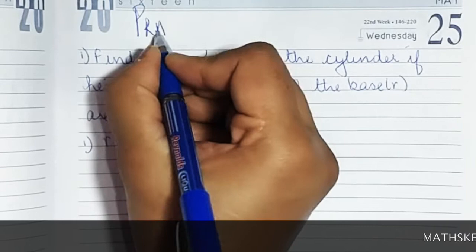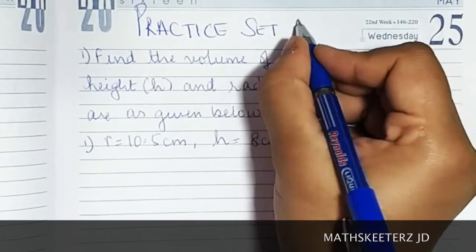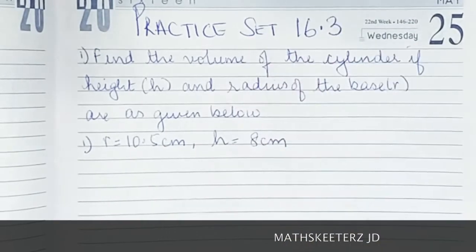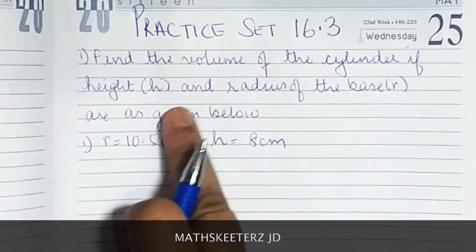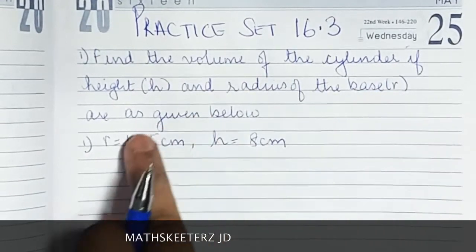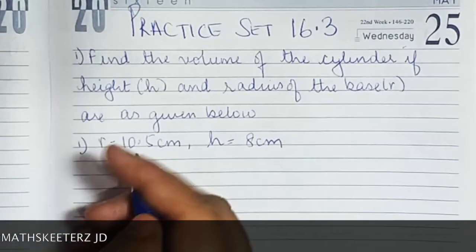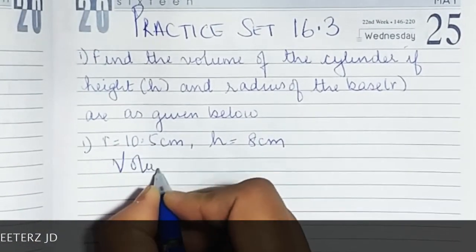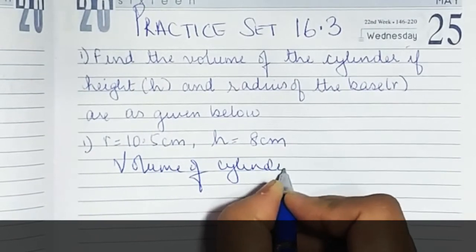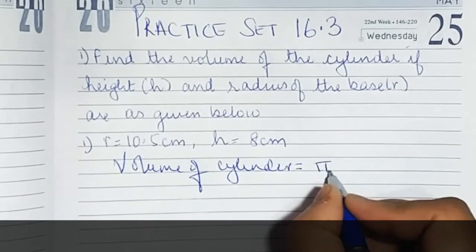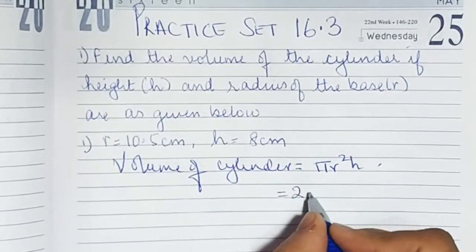Let's start with Practice Set 16.3. The first sum: find the volume of the cylinder where the height and radius of the base are given. Radius is given and height is given, you have to find out the volume. The formula for volume of a cylinder is pi r squared h.